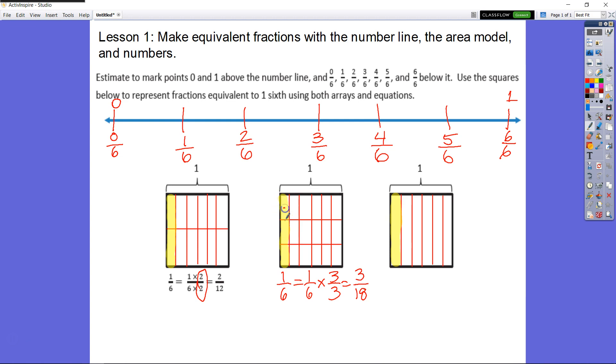We would count as 1, 2, 3 that we have shaded in out of 3, 4, 5, 6, 7, 8, 9, 10, 11, 12, 13, 14, 15, 16, 17, 18. So we know that 1/6 is equal to 3/18.